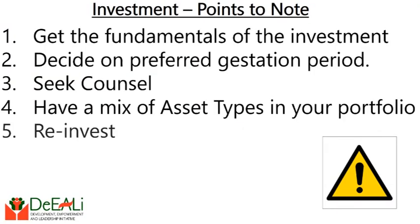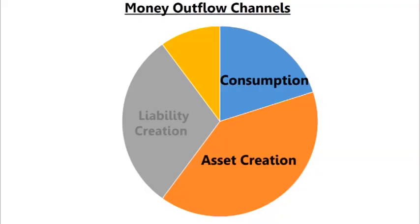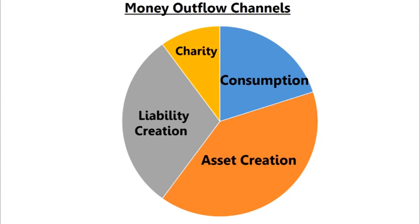When you succeed, what do you do with the returns? Is it time to go and marry a new wife, or go and buy a new car? The same discipline that got you there is the same discipline you need to apply. You must have a reinvestment policy — there must be something that says: whatever returns I make on my investment, X percent — I recommend 80 to 90 percent — should go back as reinvestment. Then the 20 percent can be added to your income and you apply the same discipline between consumption, asset creation, liability creation, and charities.